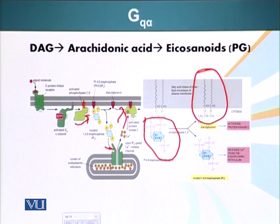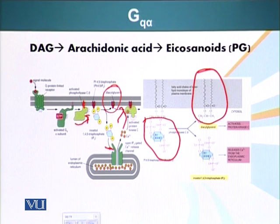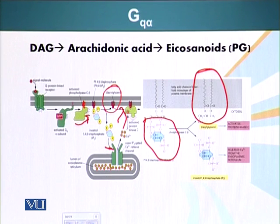Protein kinase C, as the name suggests, will phosphorylate other proteins. Additionally, diacylglycerol can be used for the production of arachidonic acid, which is ultimately converted into molecules produced in response to inflammation that cause inflammation. One of the key enzymes in this pathway is cyclooxygenase, which can be inhibited by aspirin — when aspirin donates its acetyl group to cyclooxygenase, it terminates its effect, thereby lowering inflammation and pain.